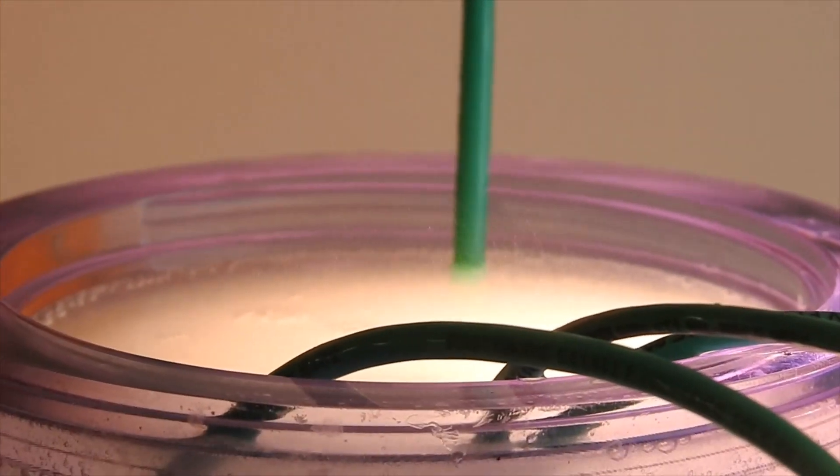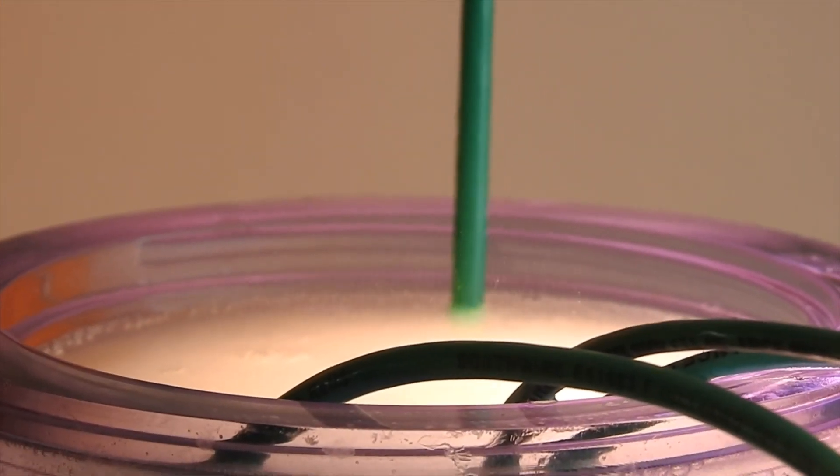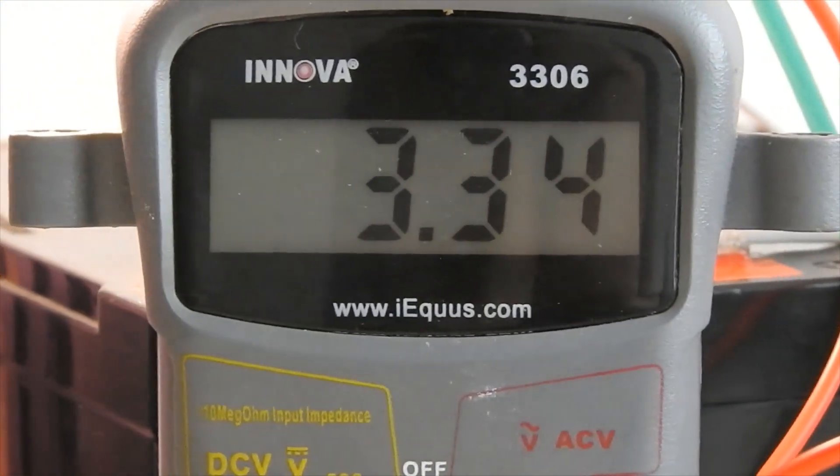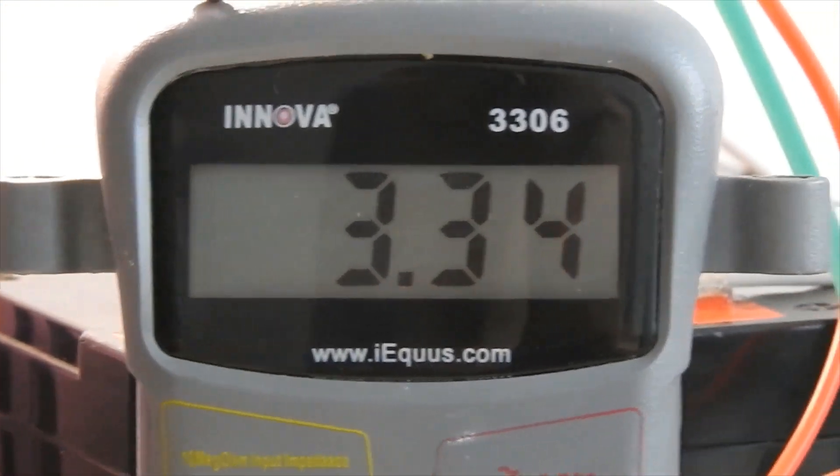That's the production at an amp and a half going into the PWM and coming out to the cell is that. Yeah, the battery charger is showing about an amp and a half.